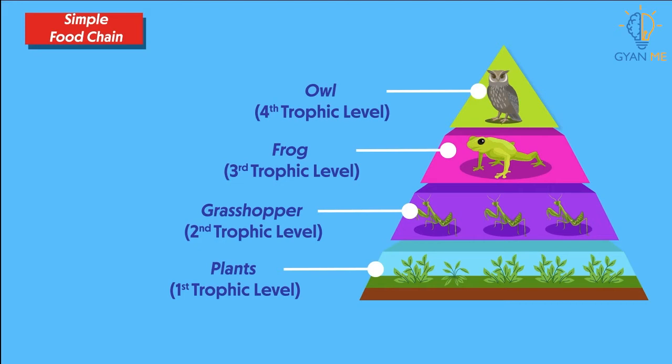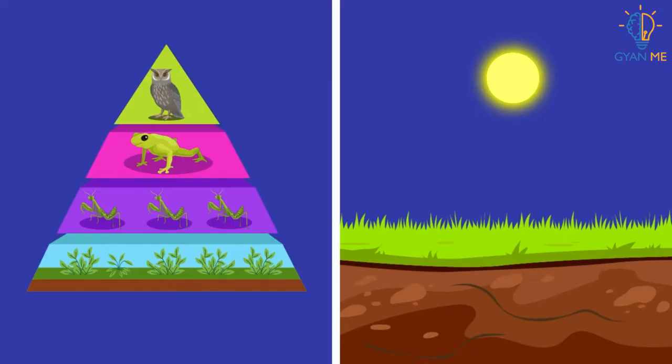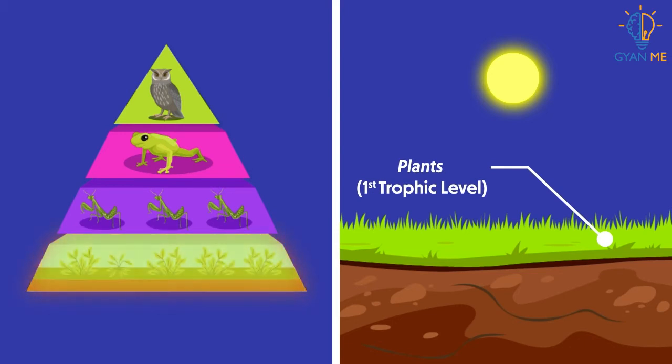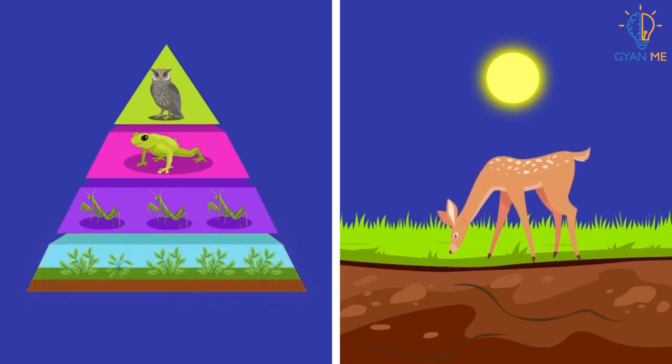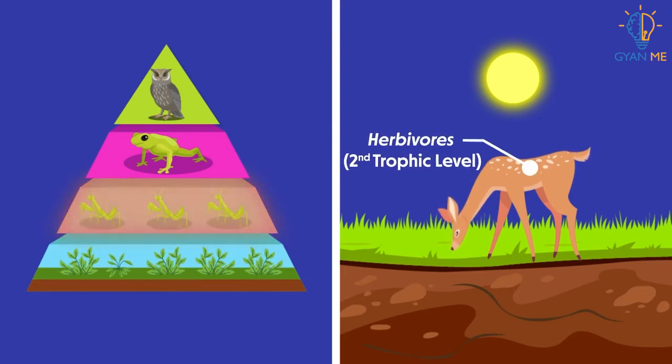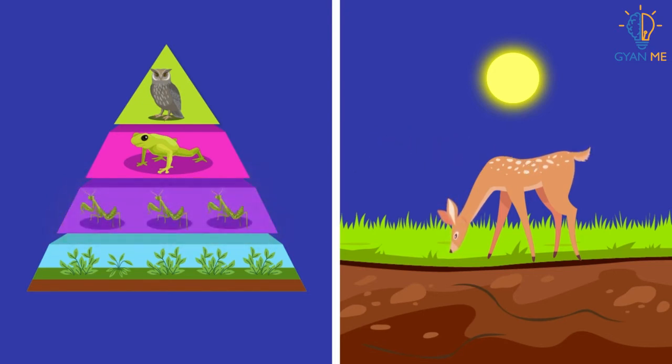Confused? Let us understand this in detail. The autotrophs or the producers are at the first trophic level. They fix up the solar energy and make it available for heterotrophs or consumers. The herbivores or the primary consumers come at the second trophic level. They include herbivore animals who eat strictly plants. These primary consumers become prey for other animals which sit on the higher level in the food chain.